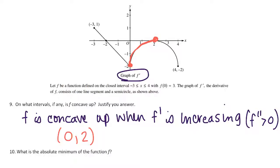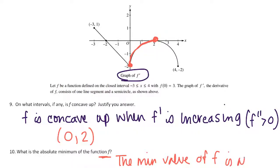For number 10, what is the absolute minimum of the function f? The best we can do is say the minimum value of f occurs at some x value. Where has f been decreasing the most? That's when f prime is negative the most. We start being negative at negative 2, and we continue being negative all the way over to the end. So we know the minimum value is going to occur when x is 4. We don't know what that actual value is — we just know where it's going to happen.